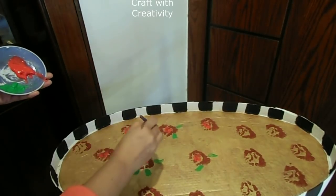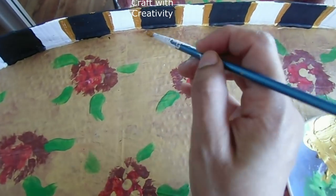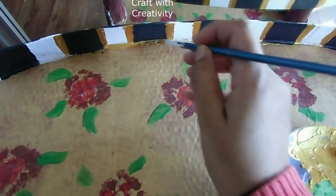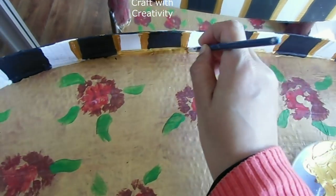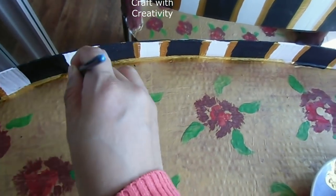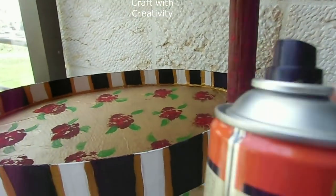I'm using golden acrylic paint again on the sides of the shelves just to define them properly. Once all colors are dry, you need to spray it if you like. If you don't like, you can skip the step. Here I will secure the colors and give them some gloss by using transparent spray.